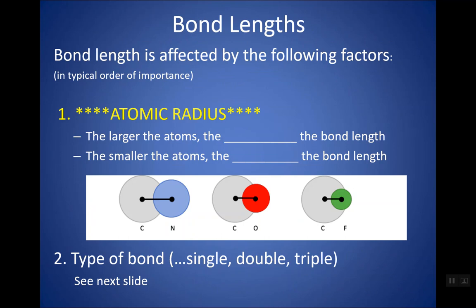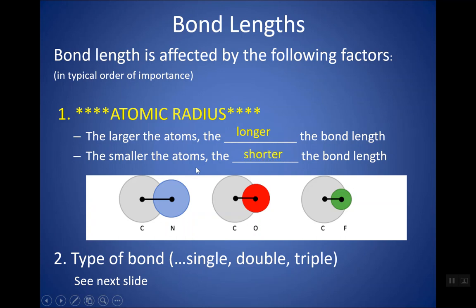Two factors affect bond length, in order of importance. The most important is atomic radius. The larger the atoms — for example C-N, C-O, and C-F — the longer the bond. We know radius decreases across the period due to increasing effective nuclear charge, so larger atoms mean longer bonds and weaker forces of attraction. Smaller atoms allow nuclei to get closer together, giving a shorter, stronger bond.